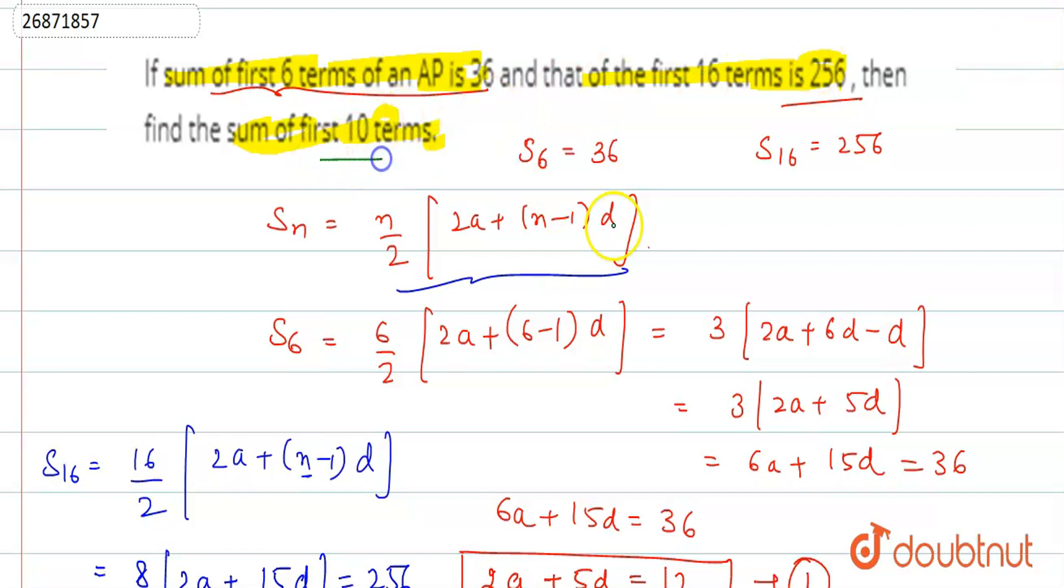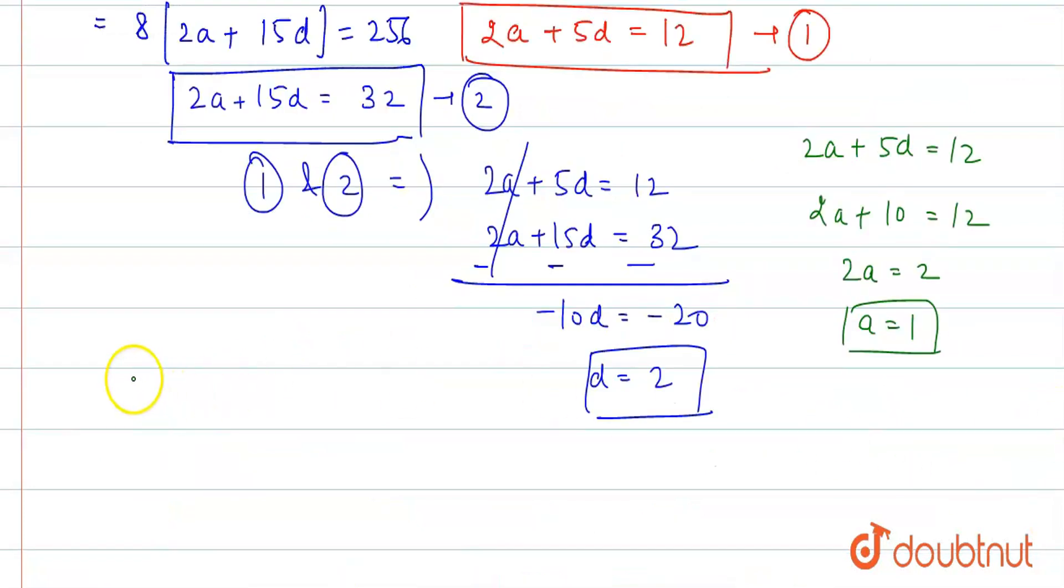Now, what do we find? Sum of 10 terms. That means S10 we find. So, we use n by 2, 2a plus n minus 1 times d. Where n is 10, this becomes 10 by 2, 2a plus 10 minus 1, which is 9d.